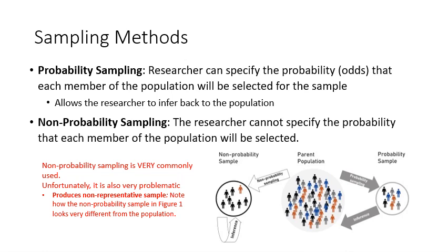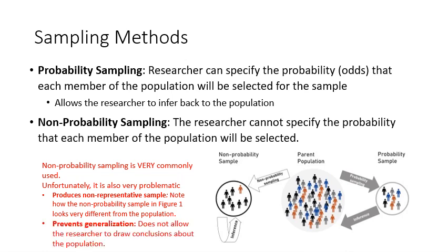In the non-probability sample illustration, you see a sample with mostly one type of character, but the population has gray, blue, brown, and black characters. This is non-representative — we have many more black characters in the sample than in the population. That means we can't infer anything about the parent population; all we can infer to is the sample itself. This prevents generalization, and a primary purpose of research is to generalize to the population.